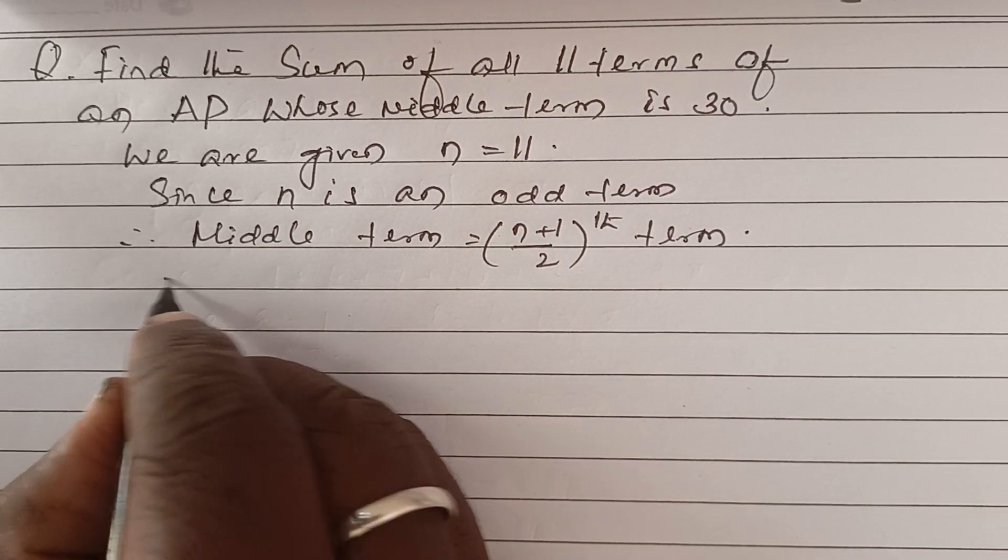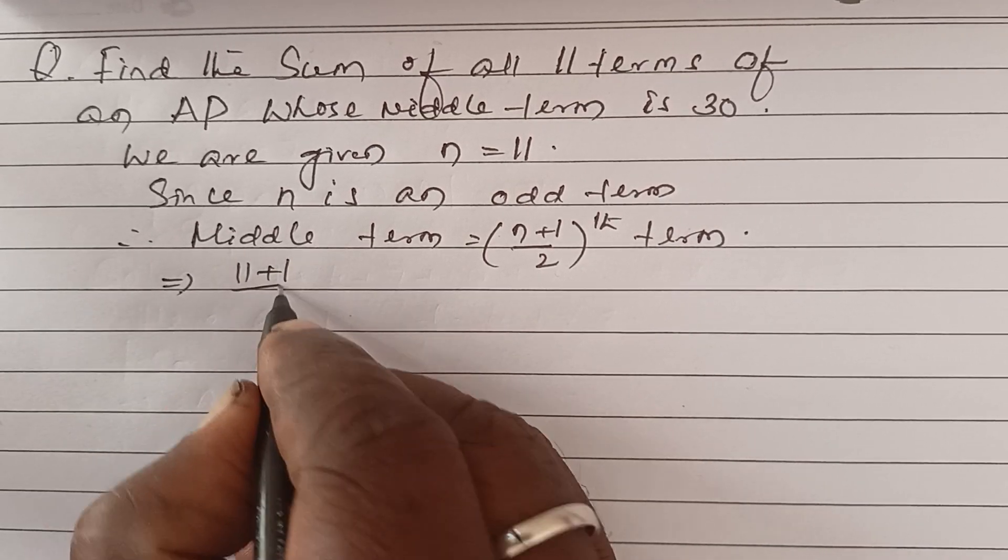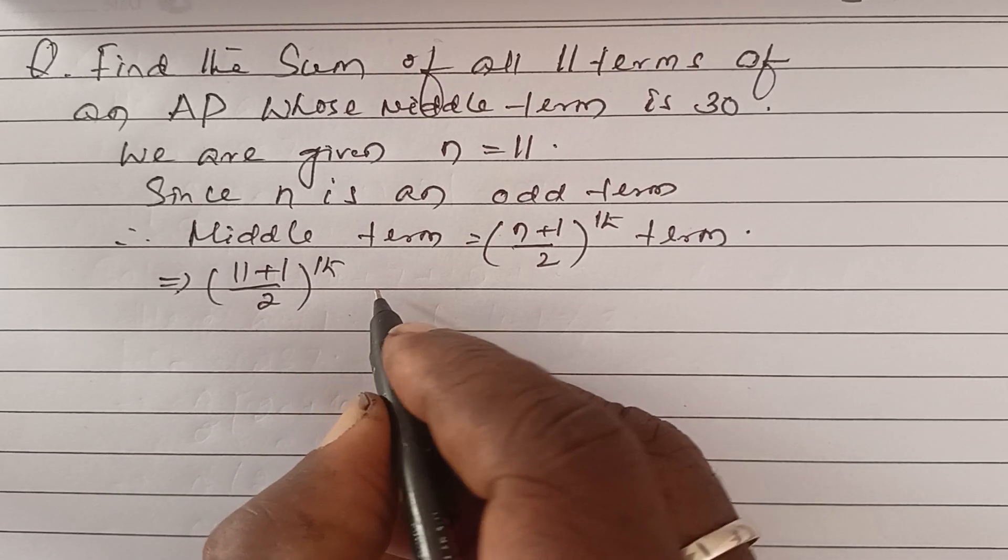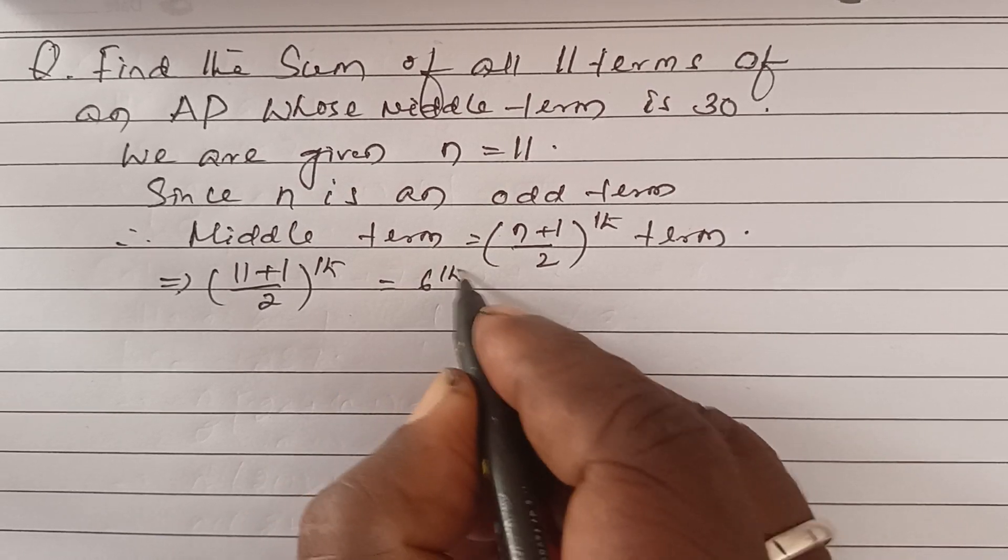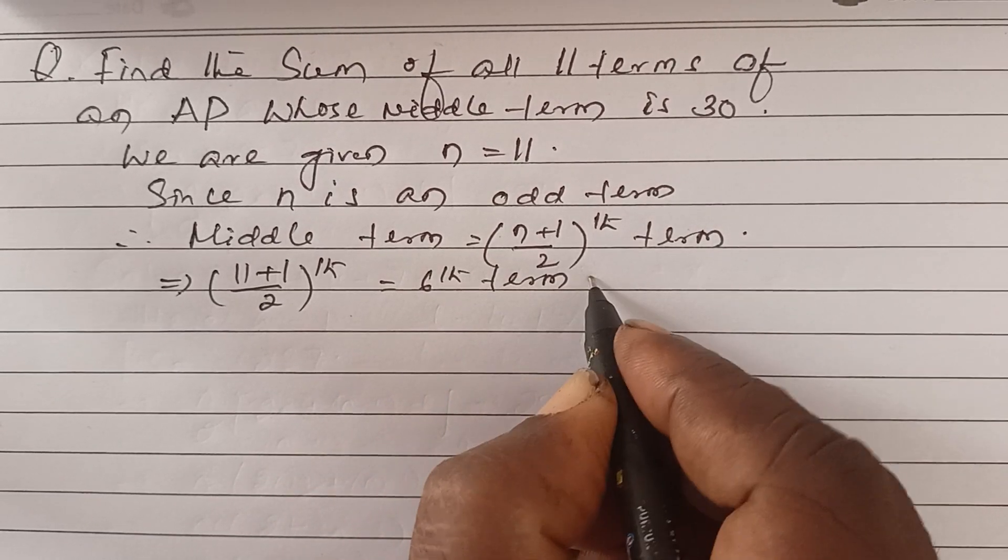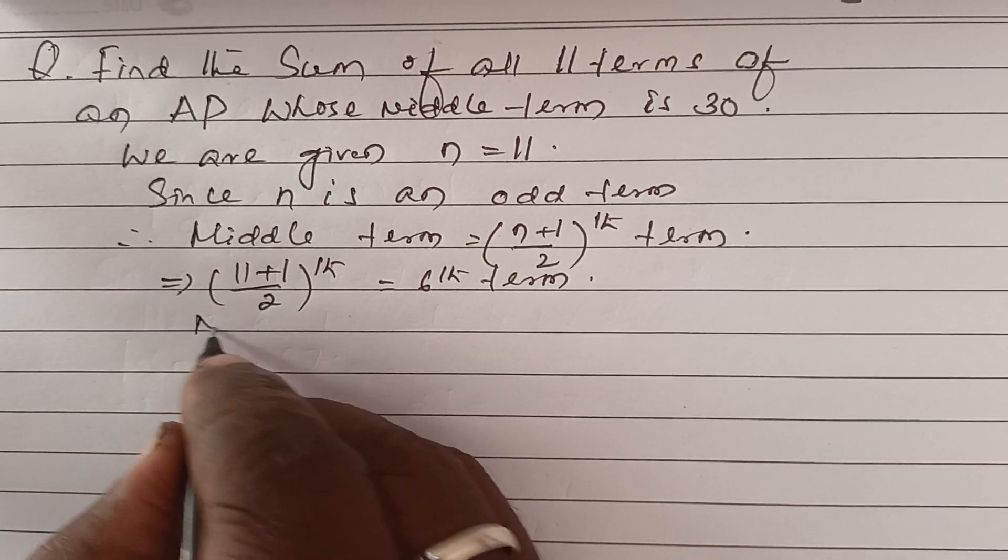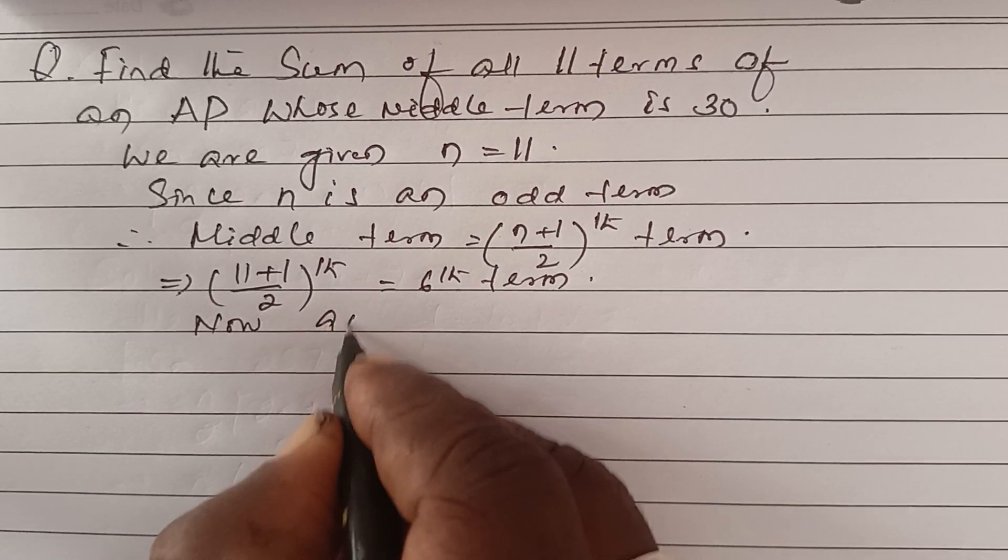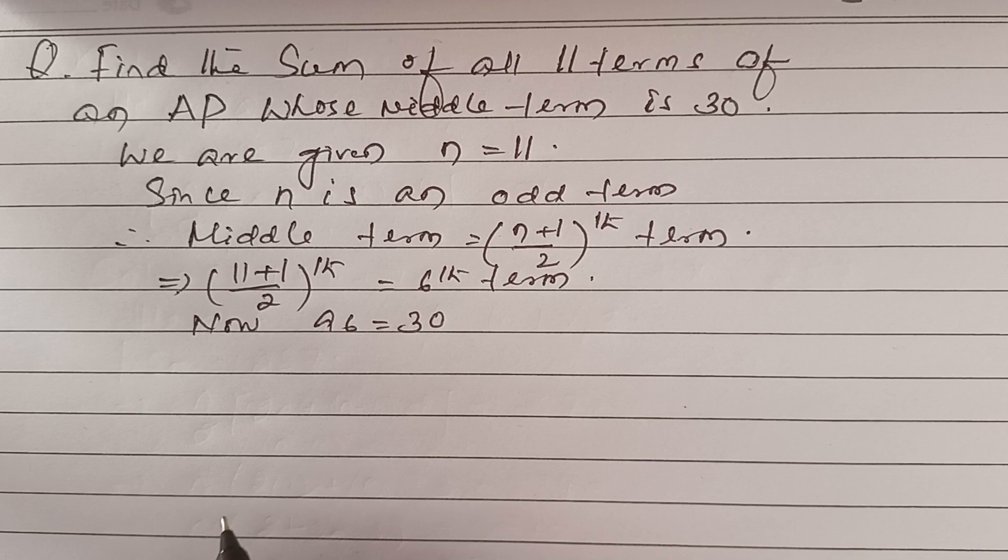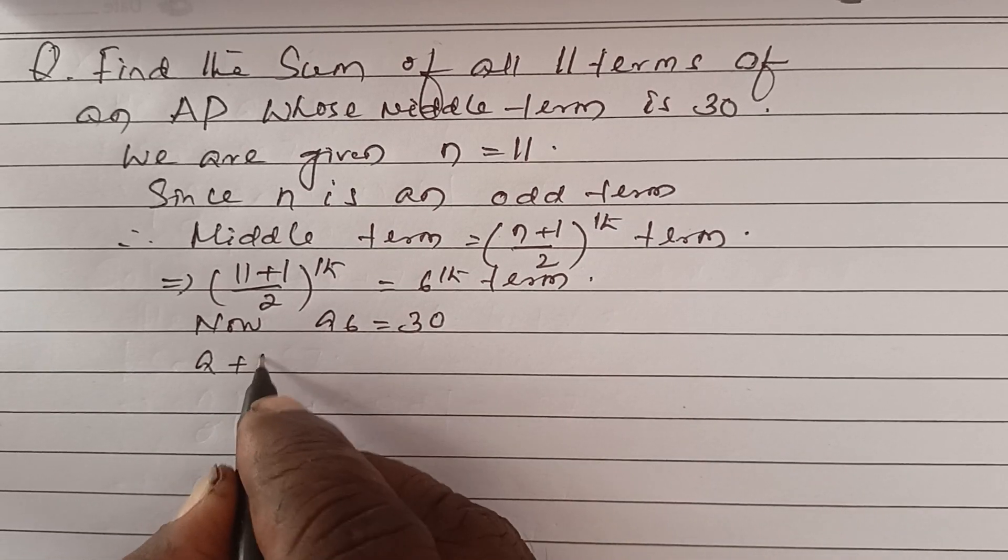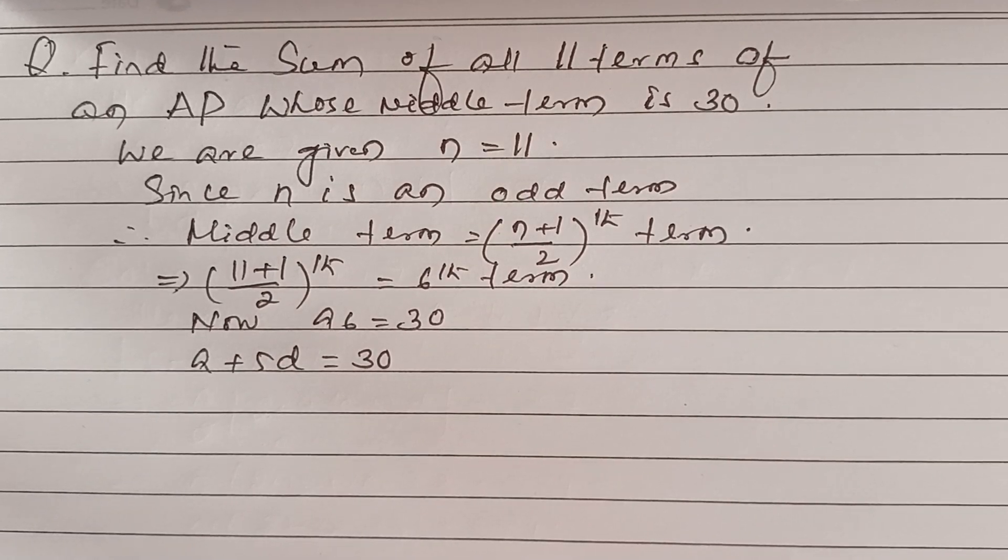So this is now 11 plus 1 by 2, which means the sixth term. Now a6 is equal to 30, so a plus 5d is equal to 30.